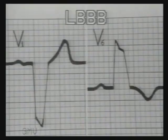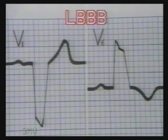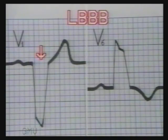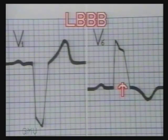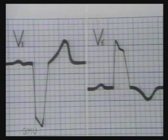Left bundle branch block. The features of left bundle branch block are: 1. The width of the QRS complexes is 3 mm or more. 2. Very deep and broad S-wave in lead V1 with no R-wave. 3. Broad slurred R-wave or R' pattern without a Q-wave in leads V5 and V6. 4. Left bundle branch block is always associated with left axis deviation.